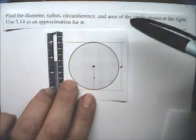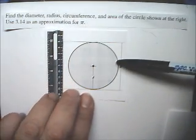And in this example, we have to find the Diameter, Radius, Circumference, and Area of this circle.